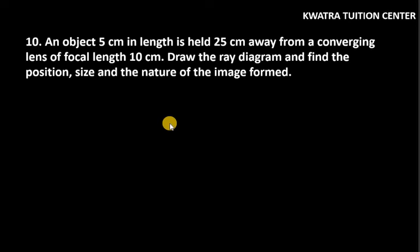Let's start with question number 10. It says an object 5 cm in length, which means that its height is 5 cm. It is held 25 cm away from a converging lens. What does converging lens mean? It is a convex lens.